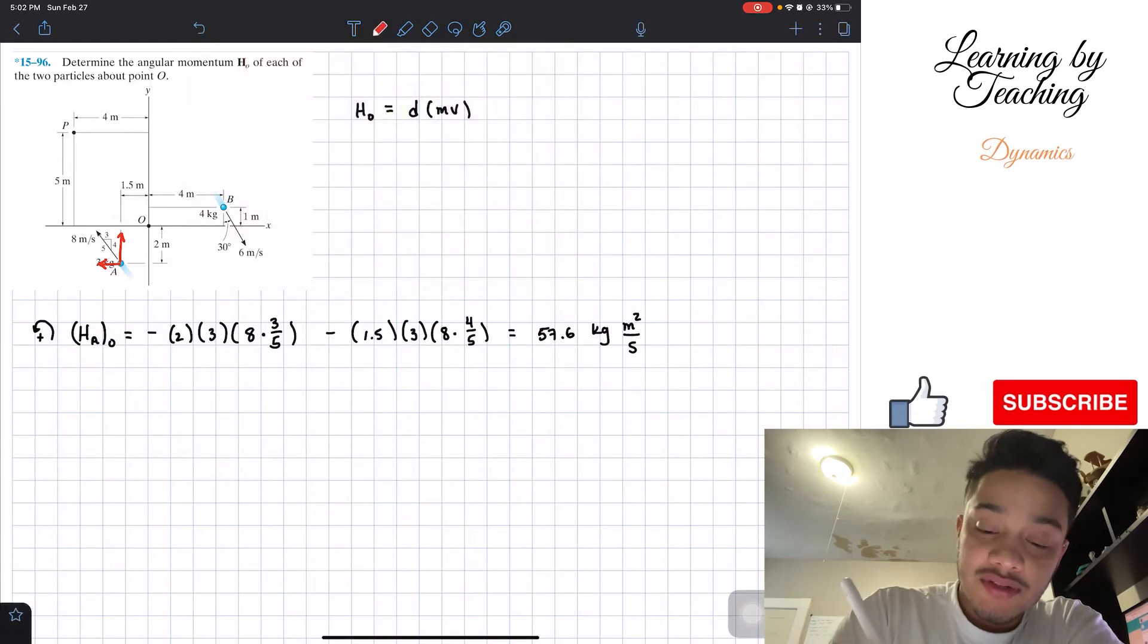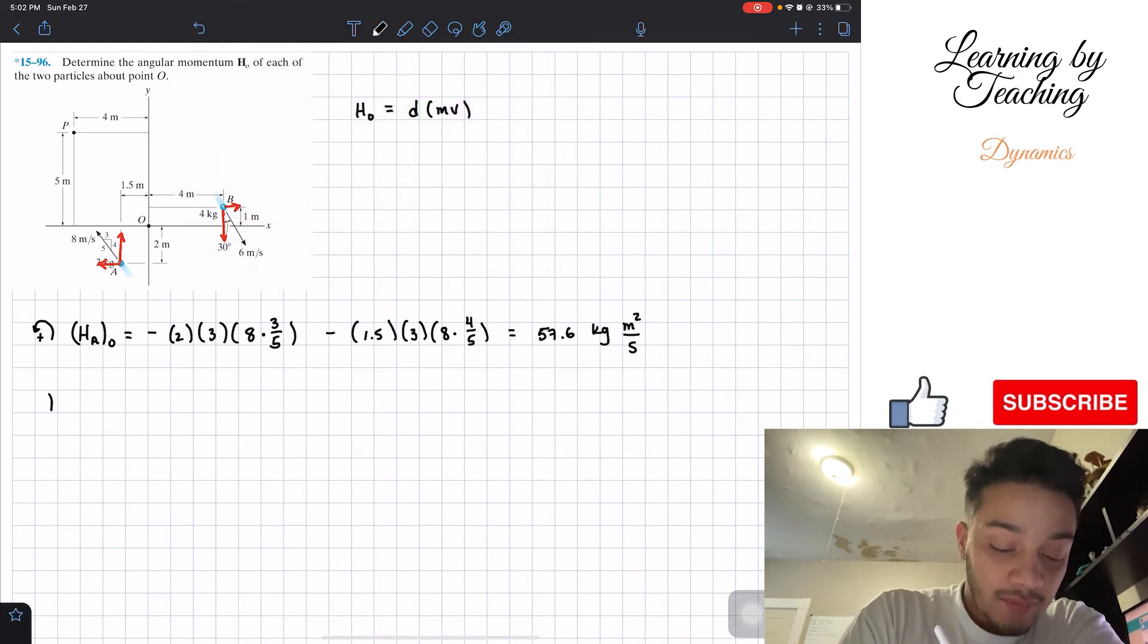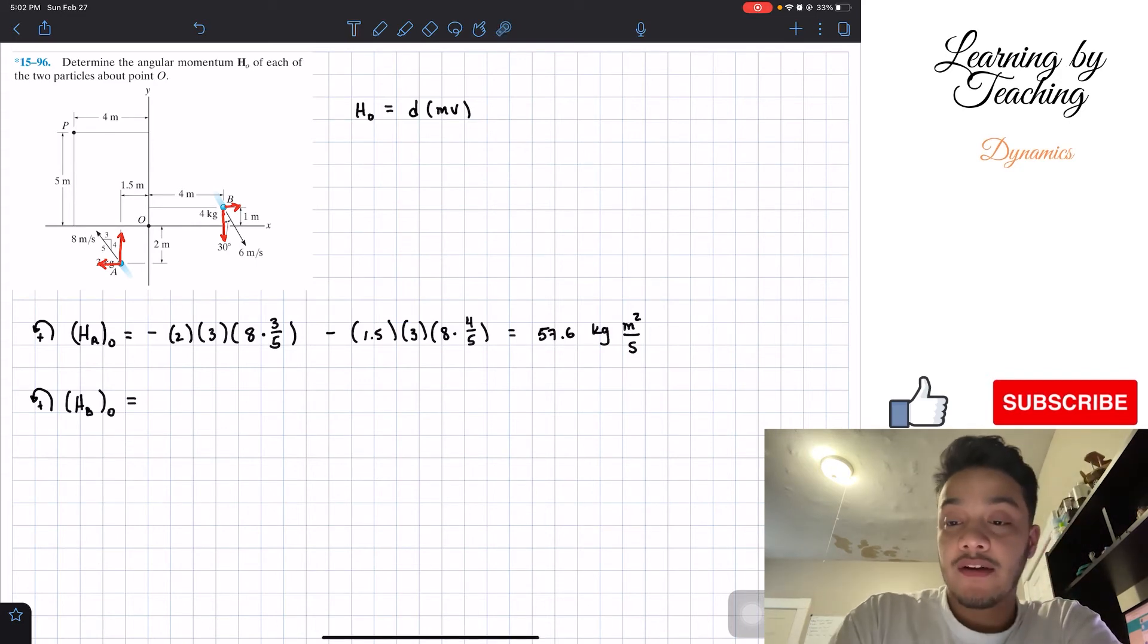We're going to now concentrate on particle B. We're going to break it very similarly into its y component and its x component. Again, we're going to assume counterclockwise is going to be positive, and we're going to do the angular momentum of particle B around my point O.